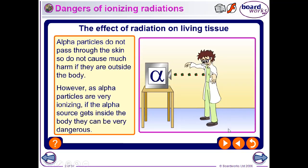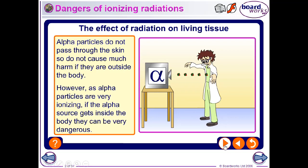Alpha particles are not much to worry about because they don't pass through the skin, or even the dead skin cells on the surface of the skin. So if the source is outside our body, it's not very worrying. But if the source is inside our body and alpha particles can reach living cells directly, it can be extremely dangerous because alpha is the most ionizing type of radiation.